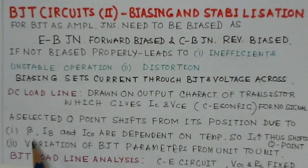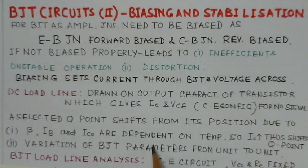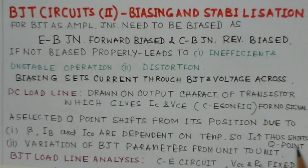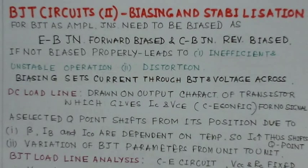The Q point shifts from its position because of the beta factor of the transistor, the base current IB, and the leakage current ICO. These are dependent on temperature, so the value of IC — which is a function of these parameters — also increases, and the increase in IC shifts the Q point. Additionally, variation of BJT parameters from unit to unit will also shift the Q point.